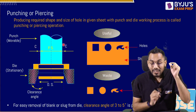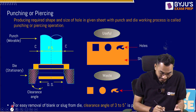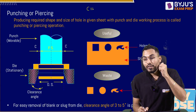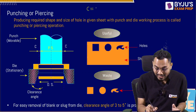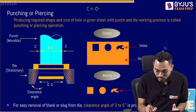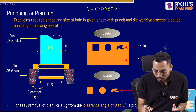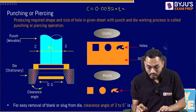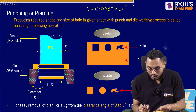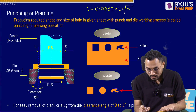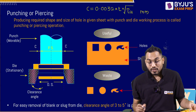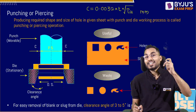It is called radial clearance C. The value of C is calculated as: radial clearance C = 0.0032 × t × √(τ_u), where t is the sheet thickness and τ_u is the ultimate shear strength of the material. The answer comes in millimeters. This is how radial clearance is calculated.